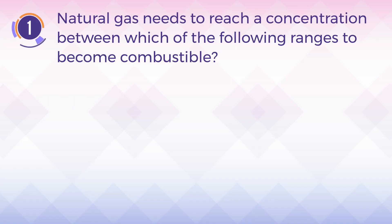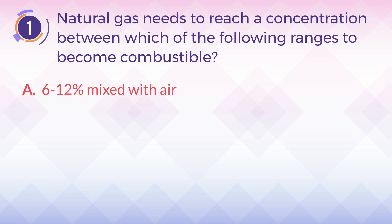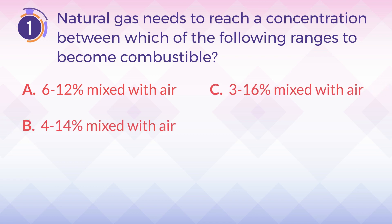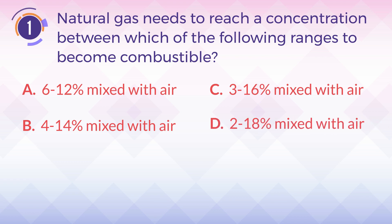Number 1. Natural gas needs to reach a concentration between which of the following ranges to become combustible? A. 6-12% mixed with air. B. 4-14% mixed with air. C. 3-16% mixed with air. D. 2-18% mixed with air.